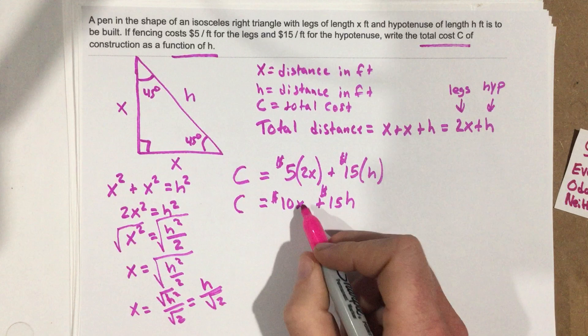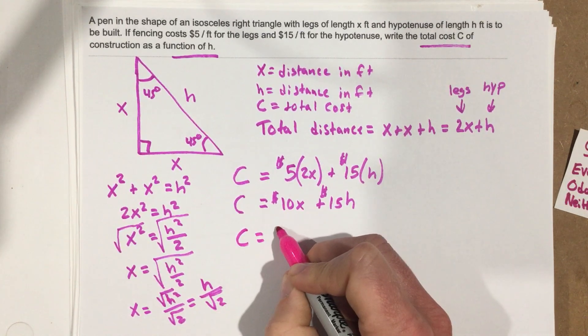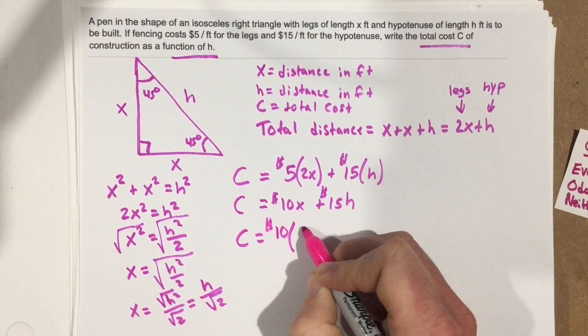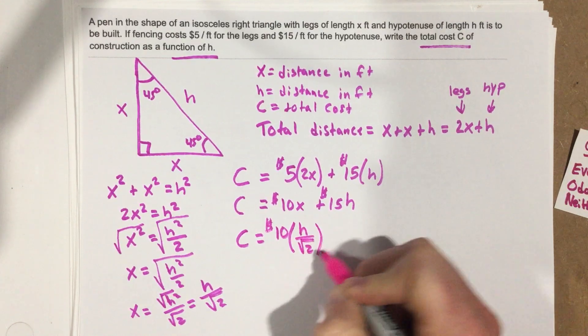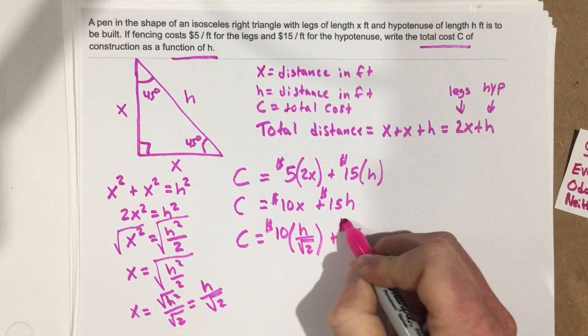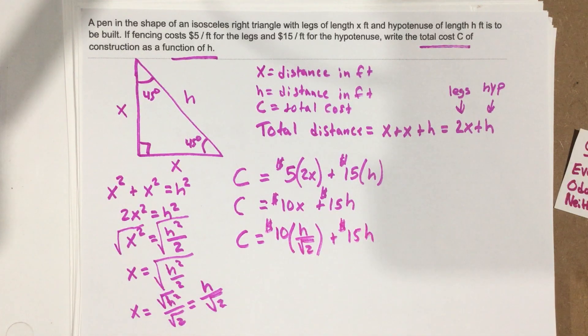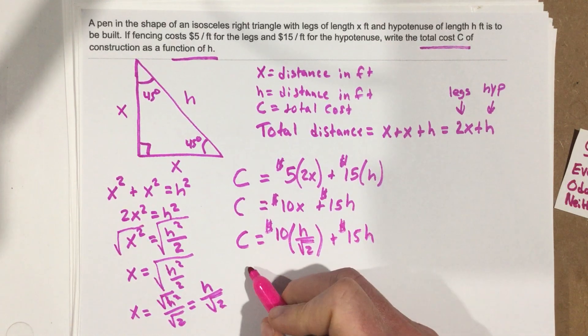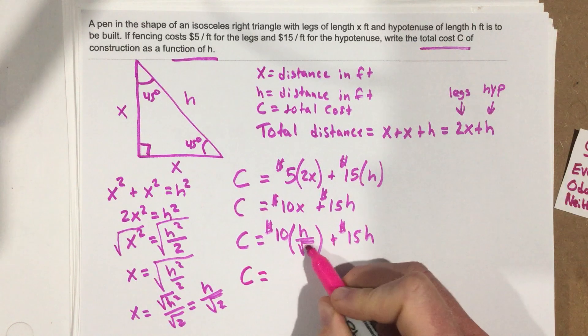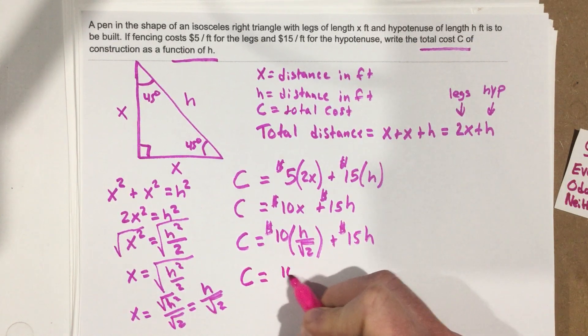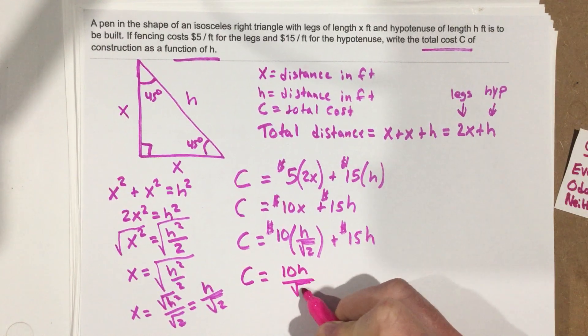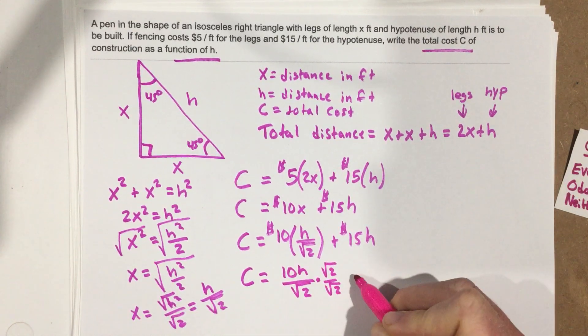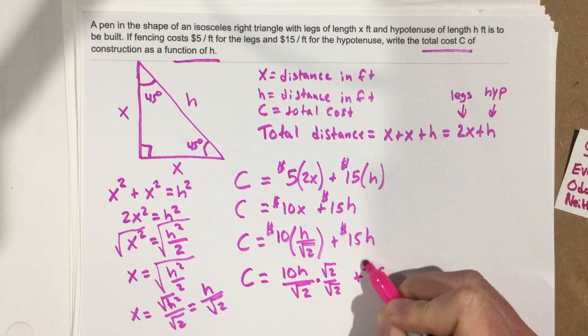So I can take H over root 2, plug it in for X. So I have C equals $10, replacing X with H over root 2, plus $15H. Now, the last step is probably to rationalize this denominator here. So when I rationalize this denominator, I'm going to get 10H over root 2, and I'm going to multiply this by root 2 over root 2. And this is still plus $15H.